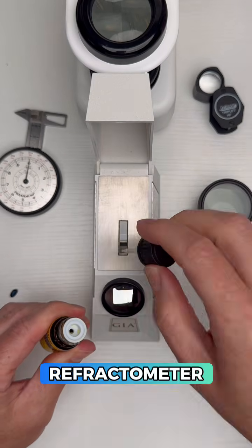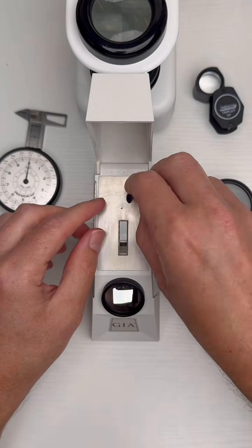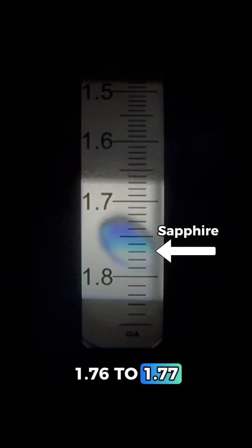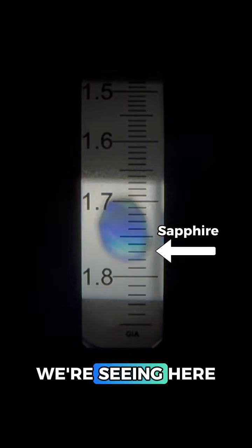Let's begin by going straight to the refractometer so we can measure how this gemstone bends light. If this is really sapphire, we should get a reading around 1.76 to 1.77 and that's exactly what we're seeing here. Glass and plastic and other imitations can sometimes give us a similar reading.